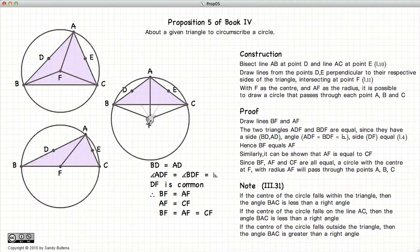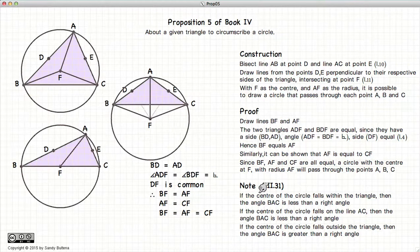And finally, if the center of the circle falls outside the triangle, then the angle BAC is greater than a right angle. This will be used in further proofs.